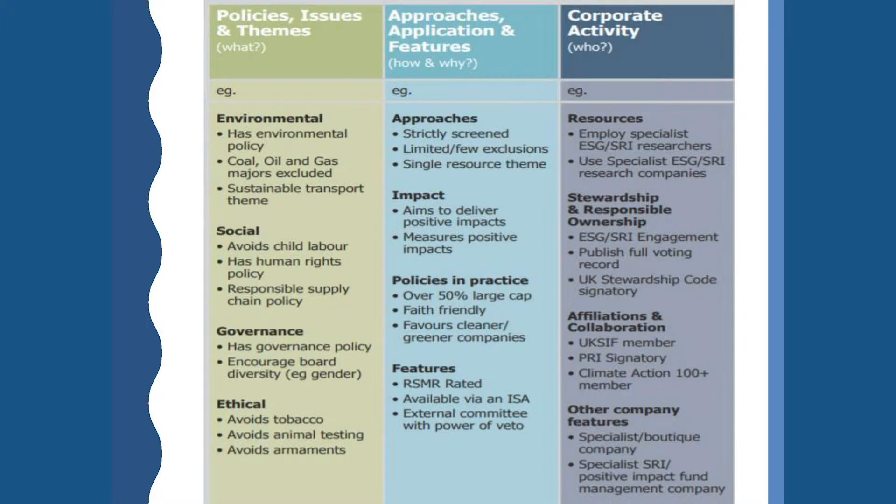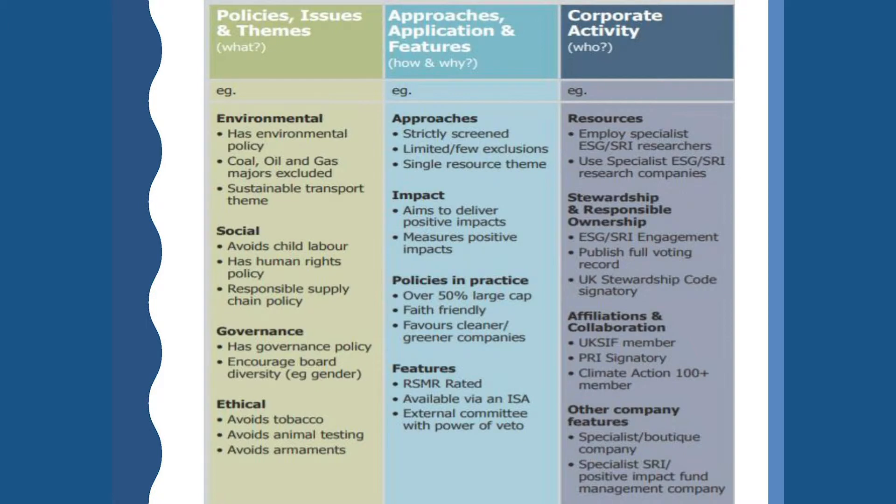With regard to influencing companies, this essentially breaks down to looking at what the fund management company does behind the scenes. Indicators of how this works include areas such as the resources they employ — do they carry out this work in house, or do they work through other organisations, perhaps collaborating with organisations that focus on encouraging positive change? Do they think about voting their shares at AGMs? Are they having meetings with companies to say that a company should make a particular change in order to help bring about positive environmental or social outcomes?